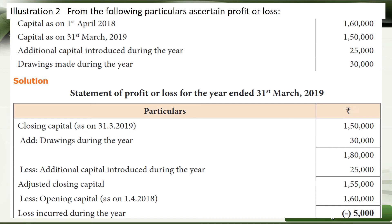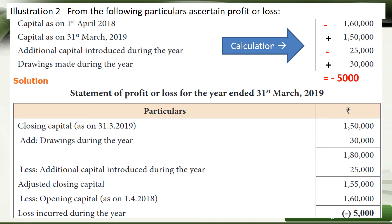Illustration 2: From the following particulars, ascertain profit or loss. Capital as on 1st April 2018 (opening capital) and capital as on 31st March 2019 (closing capital) are given, along with additional capital introduced and drawings made during the year. Applying the same template, we get minus 5,000, which is a loss incurred during the year. Opening capital is a minus, closing capital is a plus, additional capital introduced is a minus, and drawings made during the year is a plus — resulting in a loss of 5,000.